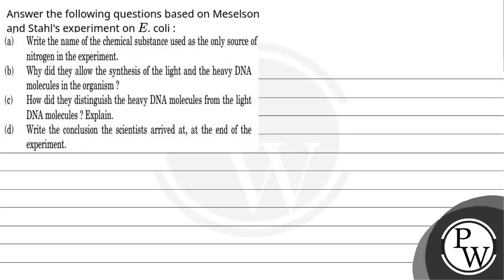Hello, Bacho. Let's see this question. The question over here says, answer the following questions based on Meselson and Stahl's experiment on E. coli. A is, write the name of the chemical substance used as the only source of nitrogen in the experiment. B, why did they allow the synthesis of the light and heavy DNA molecules in the organism? C, how did they distinguish the heavy DNA molecules from the light DNA molecules? D, write the conclusion the scientist arrived at, at the end of the experiment.